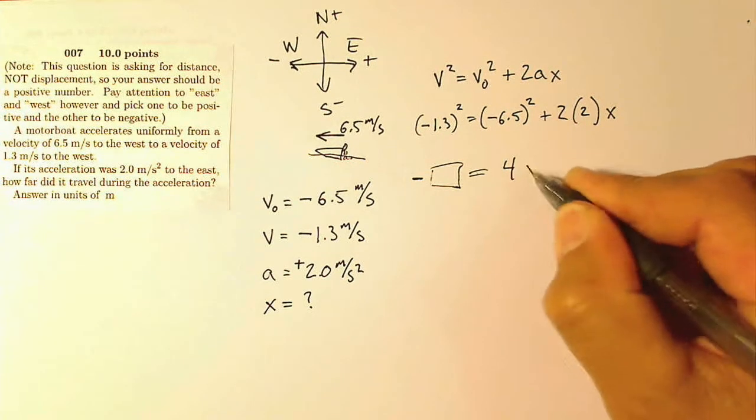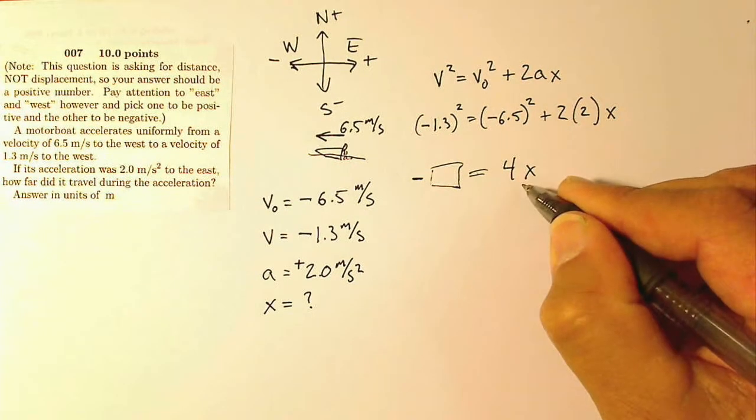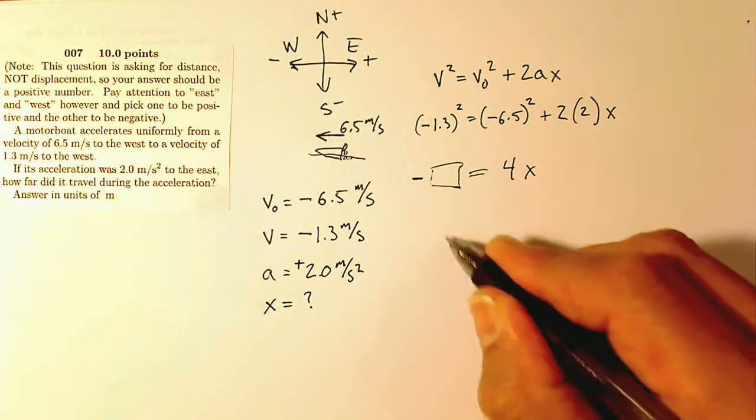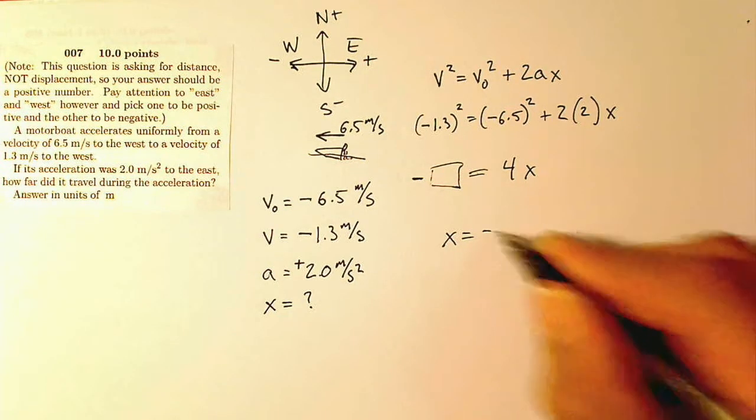So that's going to equal 4 times x for me, 2 times 2, 4. If I divide, I'm going to wind up with some negative number for x, which is fine. So my displacement is going to be negative something or other.